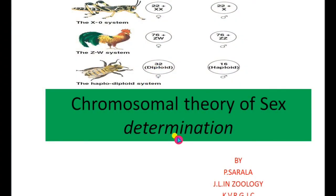Sex determination in animals is categorized under three methods: the first one is chromosomal theory of sex determination, the second one is genic balance theory, and the third one is the haplodiploidy method.